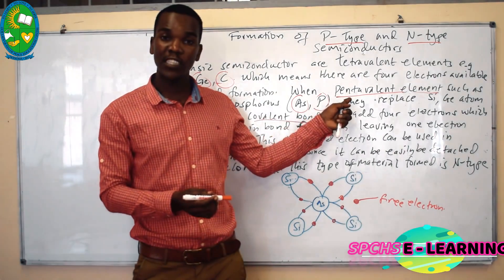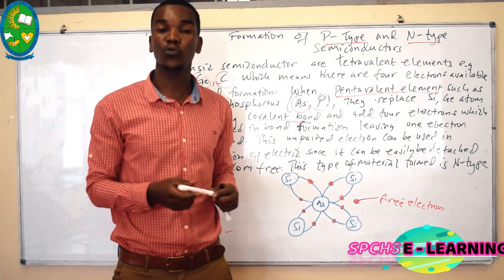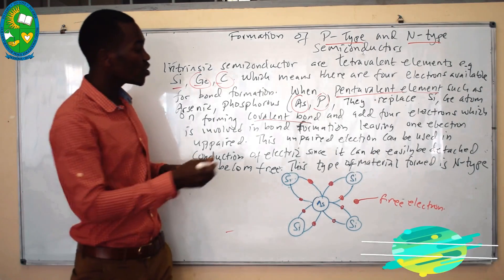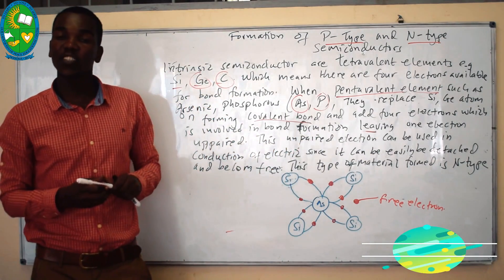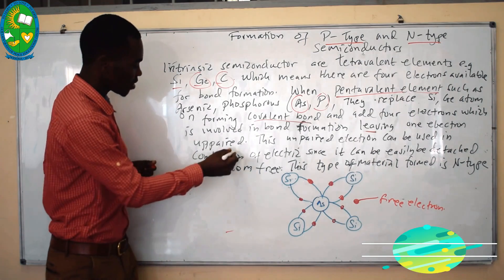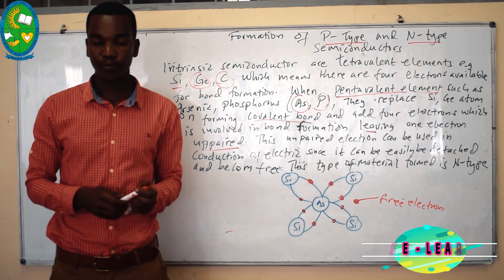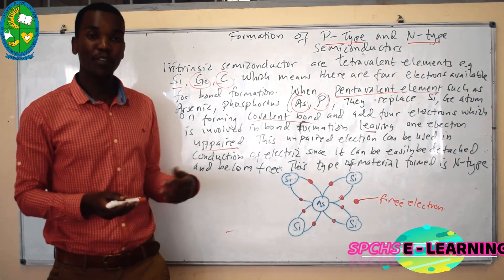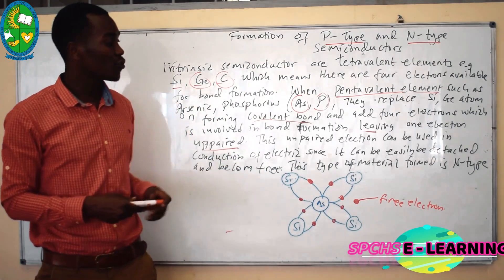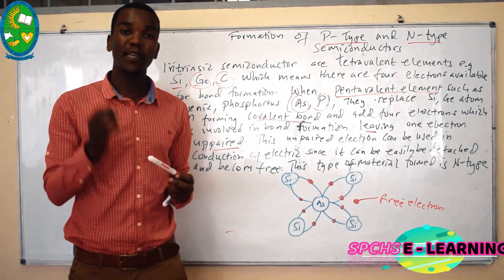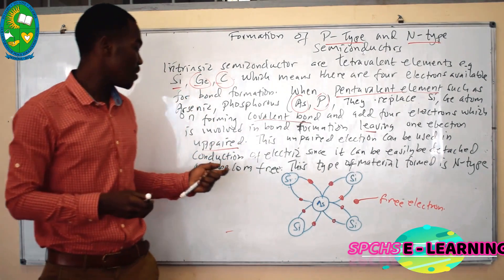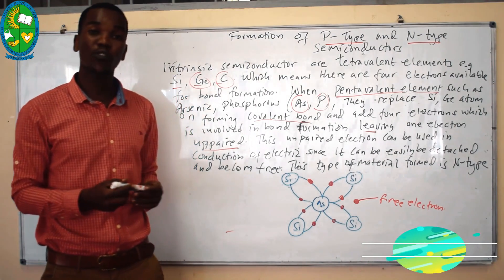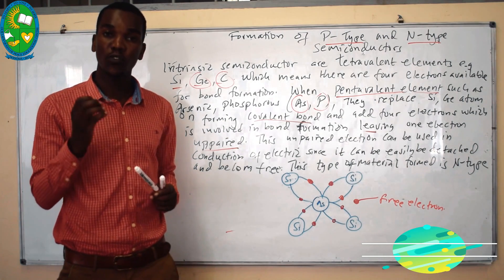Remember, these pentavalent elements have five outermost electrons available for bond formation. Therefore, only four will be involved in forming the crystal structure, leaving out one electron which is unpaired. This unpaired electron is free to move when an electric field is applied, meaning the electrical conductivity of the material is altered by the added pentavalent element.